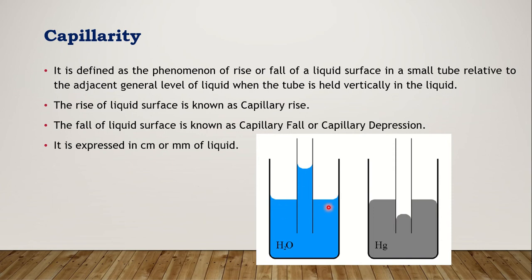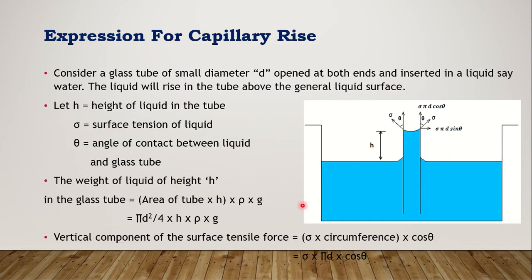The general level of liquid is the reference. The rise of water is greater than the general level; the fall of mercury is lesser. This phenomenon is called capillary action. When rise occurs inside a capillary tube, it's called capillary rise; when fall occurs, it's called capillary fall or capillary depression. This rise or fall is denoted as height h, and capillarity is measured in centimeters or millimeters.